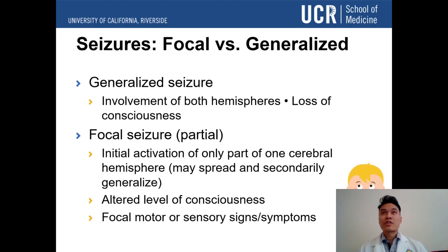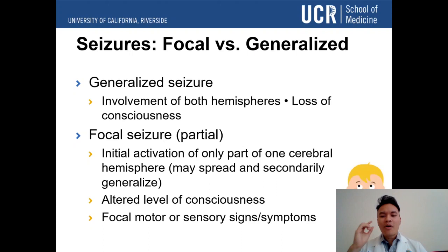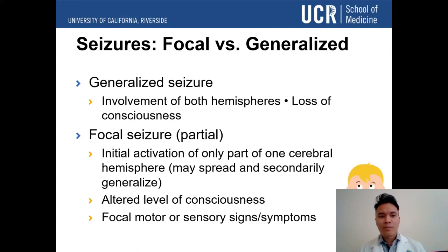What are the differences between types of seizures? A generalized seizure involves both cerebral hemispheres and usually involves loss of consciousness. A focal seizure, also known as a partial seizure, involves initial activation of only one part of a cerebral hemisphere. It can spread and secondarily generalize, but consciousness is not completely lost like in a generalized seizure, and you may see focal motor or sensory signs.